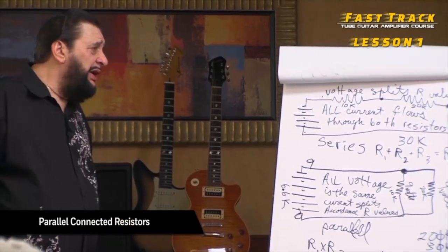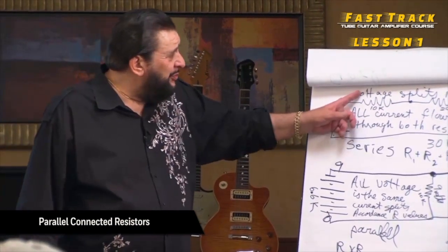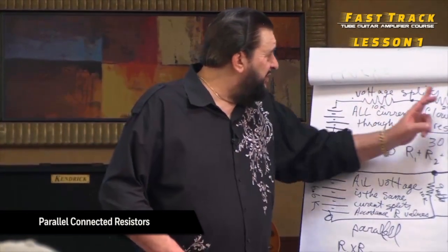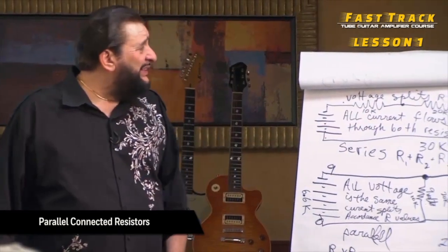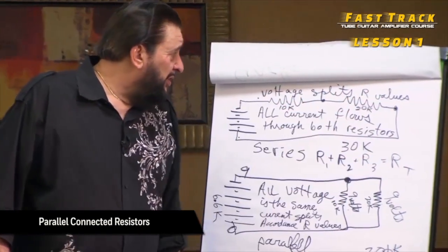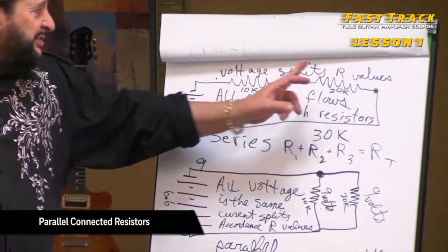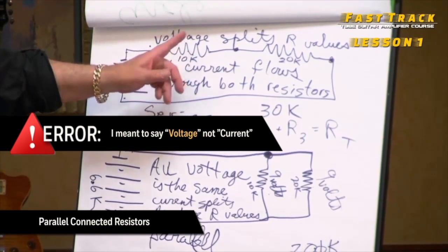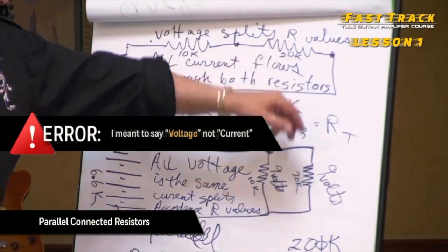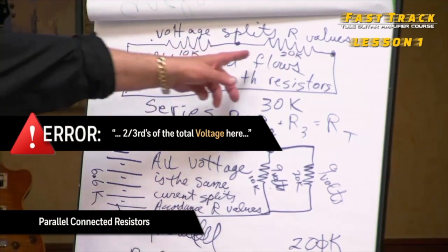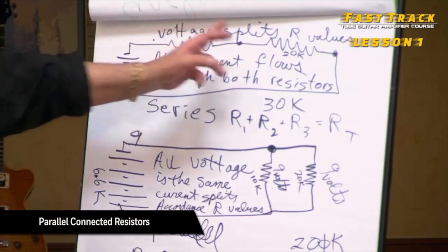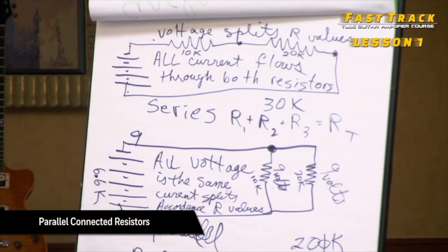With the series circuit, the voltage splits between the two resistors unevenly, in proportion to the R values. Since there's 30k total with 10k and 20k, a third of the total resistance is on one side and two thirds on the other. So a third of the total current goes through one and two thirds goes through the other — together that's three thirds, the full amount.